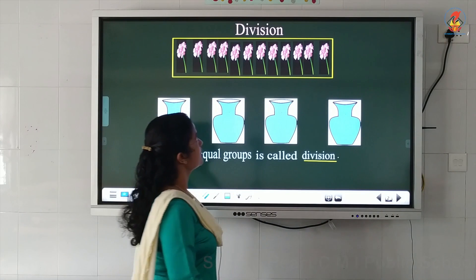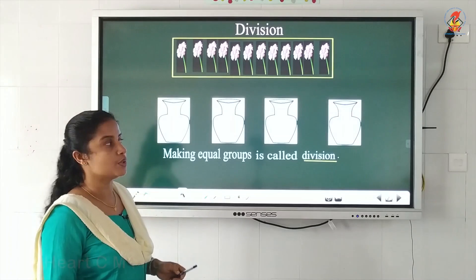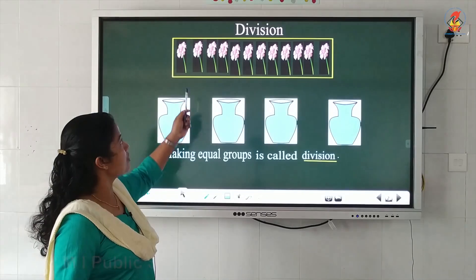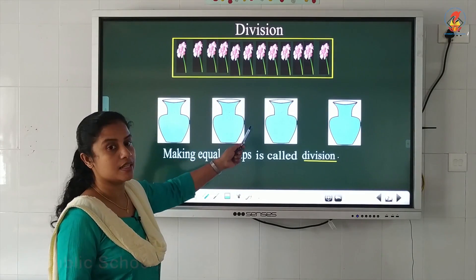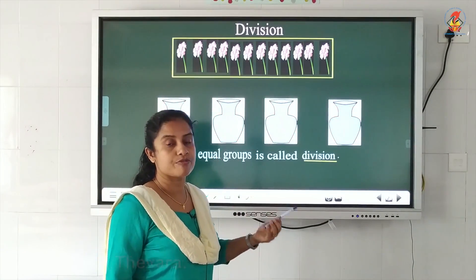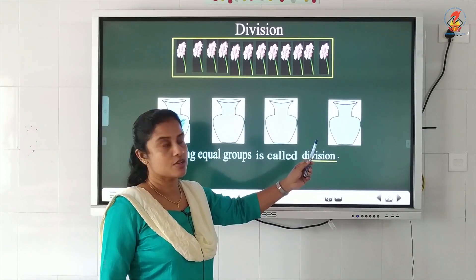Look into the board, children. Here you can see a box, and inside the box there are 12 flowers. Here you can also see 4 vases. What you have to do is distribute the flowers such that there should be an equal number of flowers in each vase.